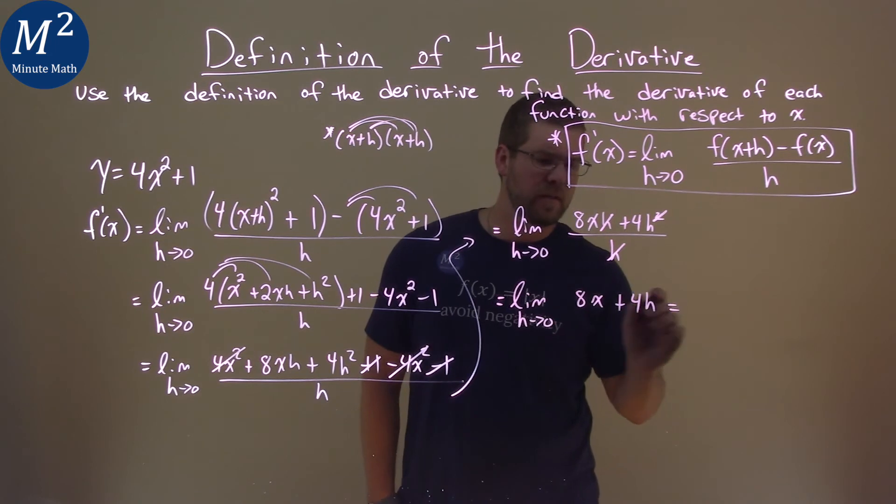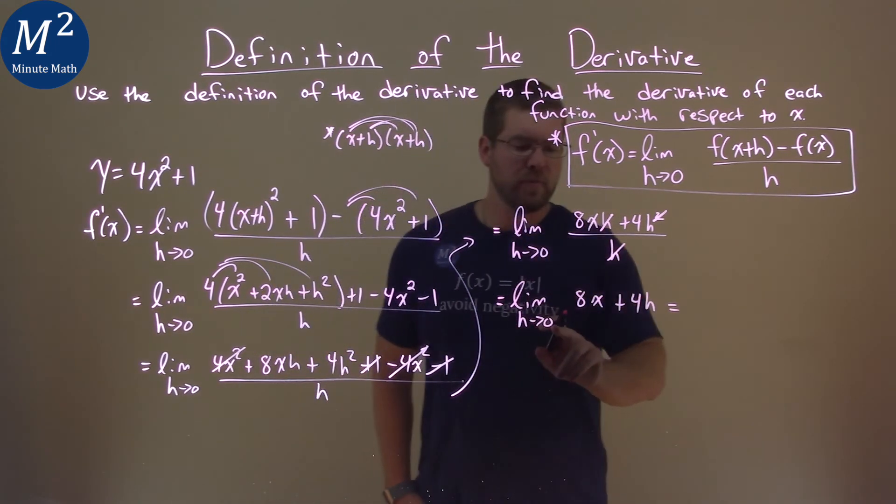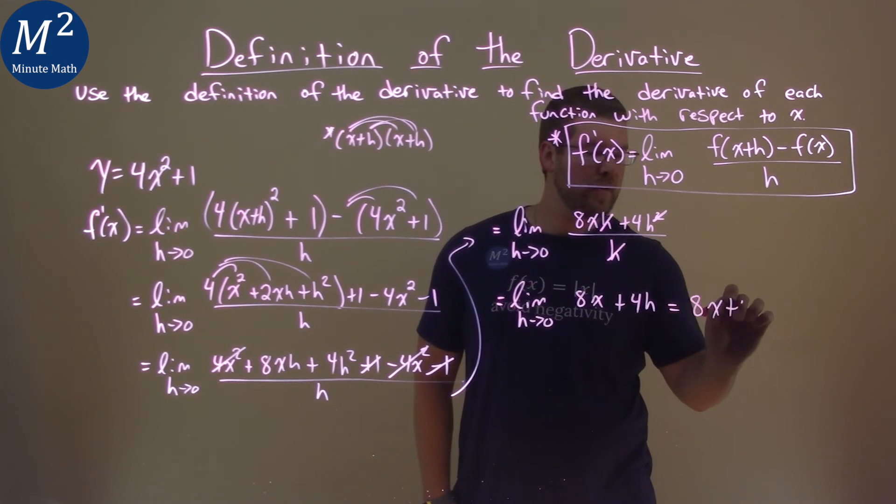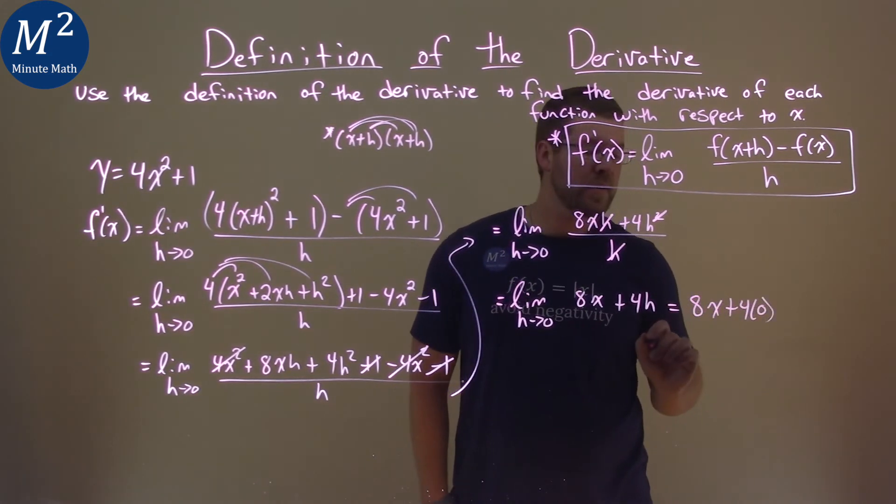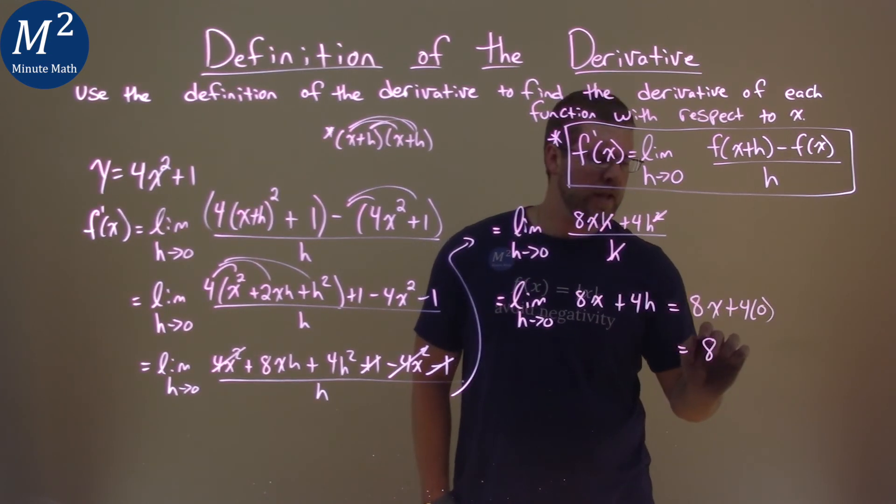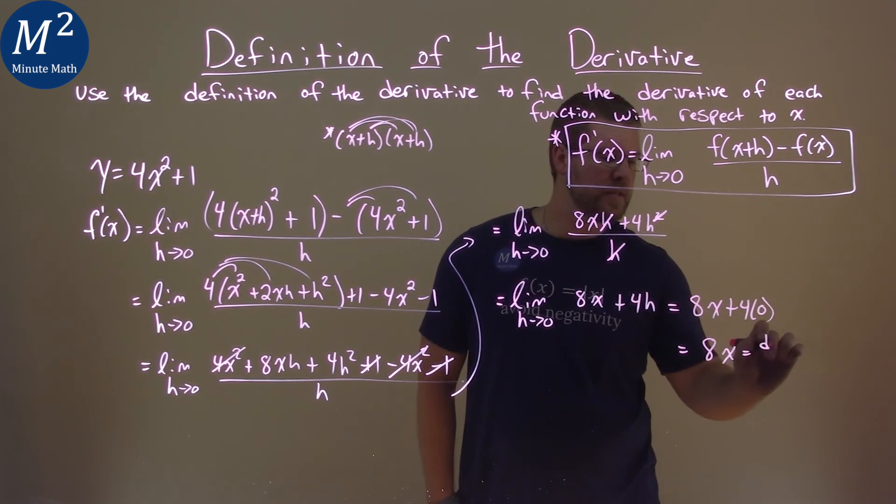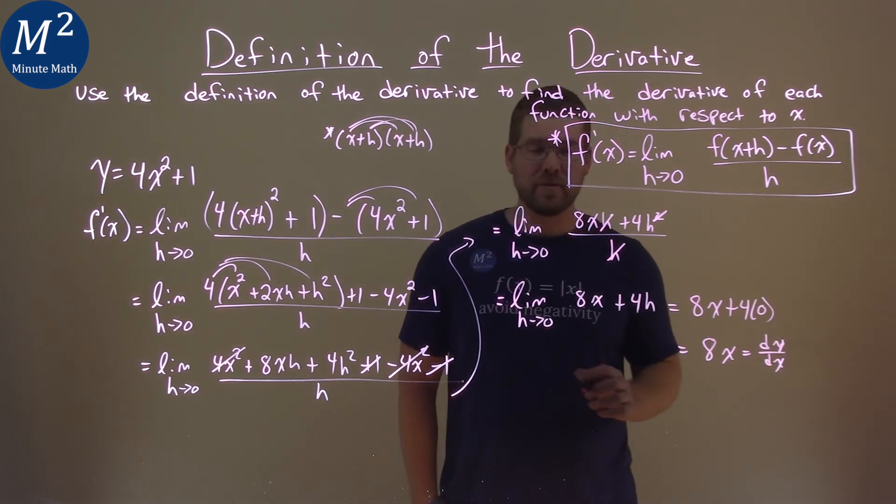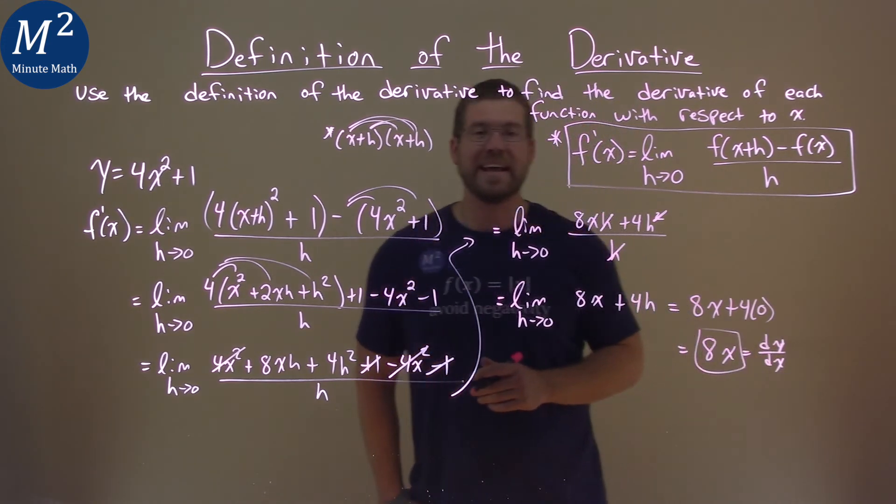And now we can take the limit. We plug the limit in. We can directly put zero in for h and we have 8x plus 4 times zero. And what's 4 times zero? Zero. So we're left with 8x here and that's equal to our dy/dx. And so our final answer here is just 8x.